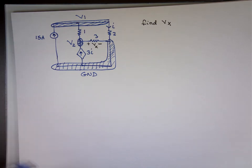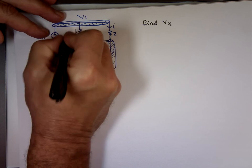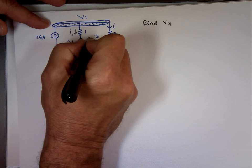And again, you can assign current any direction that you want. So I can say, I'm gonna make this current coming down the value I1. I'm gonna call this current in this direction, I sub three.